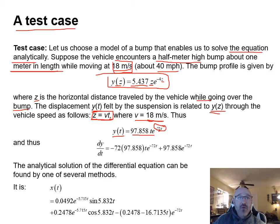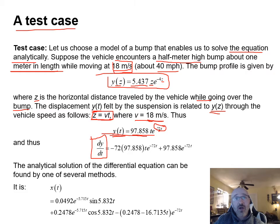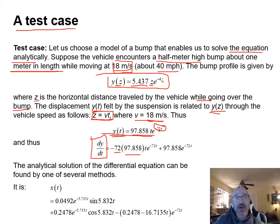Taking the first time derivative, dy/dt = −72 × 97.858·t·e^(−72t) + 97.858·e^(−72t).